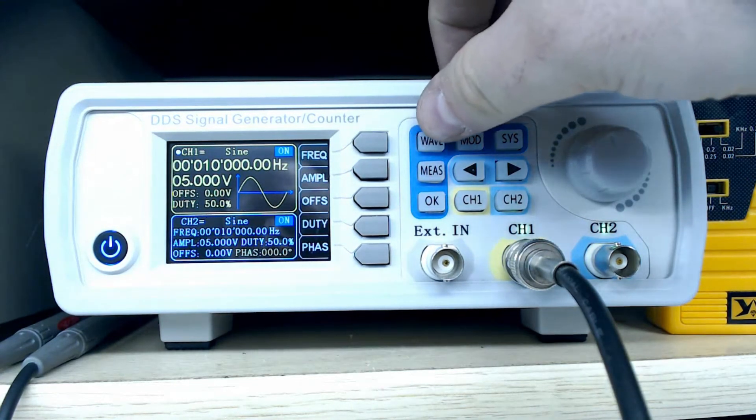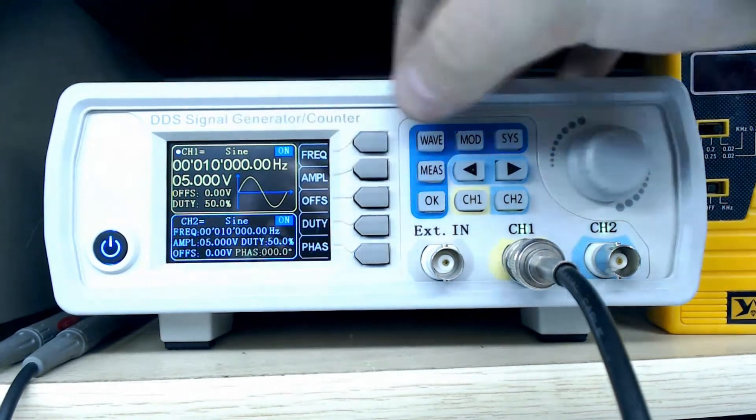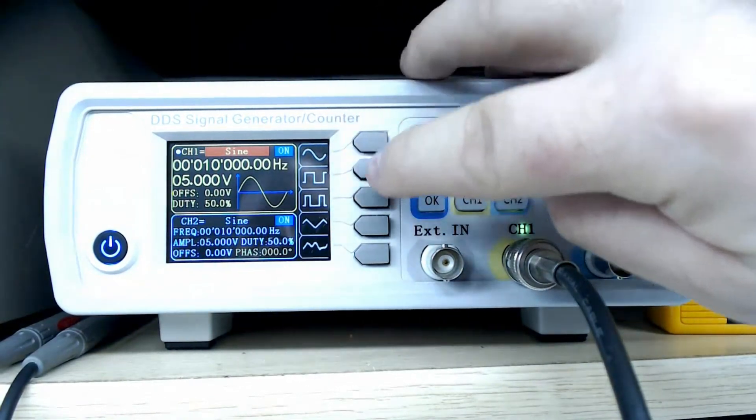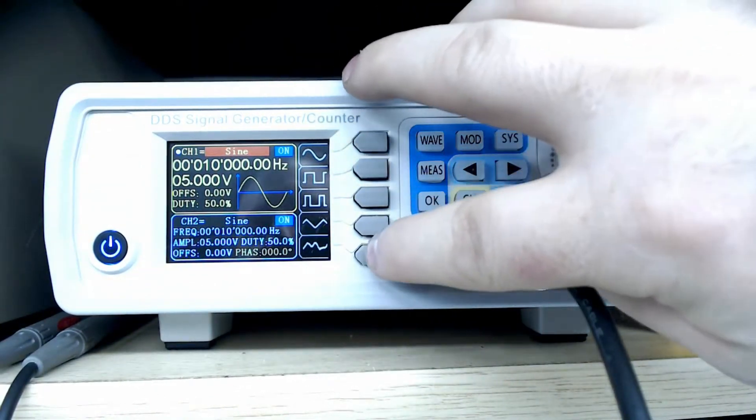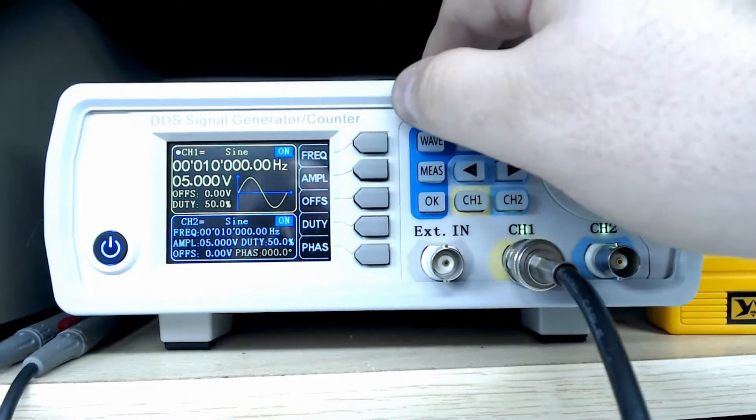To select what kind of wave type you want, you basically press the wave button. You can see right here it's on sine. If you press this you have the option of sine wave, square wave, pulse, triangle, and basically a bunch of arbitrary waves. Right now we'll select sine.